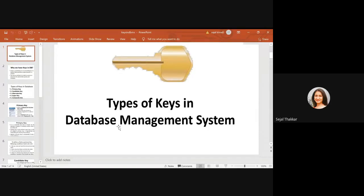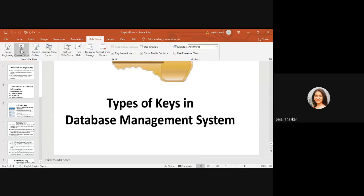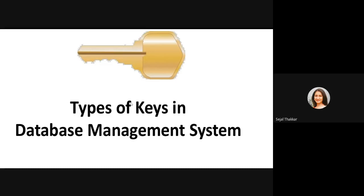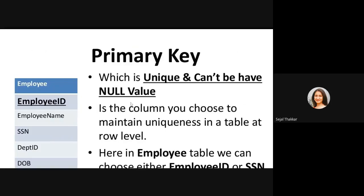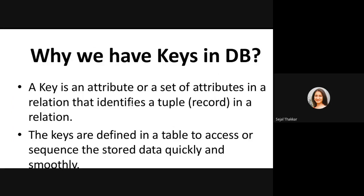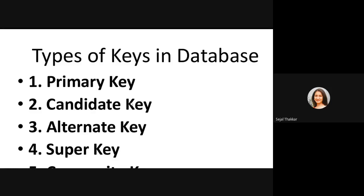Today's topic is types of keys in DBMS. Every time you are learning normal forms and other things, you have heard about keys, even in ER diagrams. I have explained what is primary key and foreign key, but that was brief. Today I'm going to explain primary key, candidate key, alternate key, and super key. A key is an attribute or set of attributes that identifies a row in a relationship. The keys are defined in a table to access the stored data quickly and smoothly. There are various types: primary key, candidate key, super key, alternate key, and composite key.